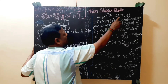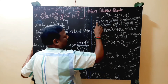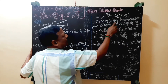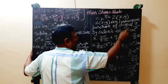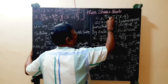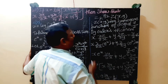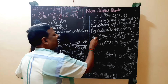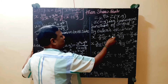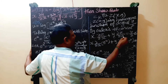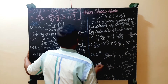So z of x comma y equals k power 7 by 2 into z of x comma y. Therefore z is a homogeneous function of degree 7 by 2. By Euler's theorem, x dou z by dou x plus y dou z by dou y equals 7 by 2 into z.